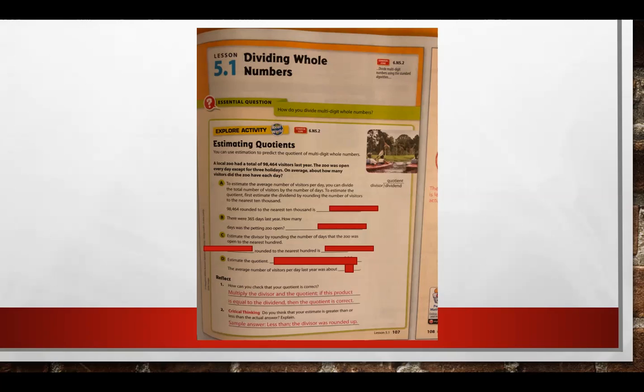Part C. Estimate the divisor by rounding the number of days that the zoo was open to the nearest hundred. 362, rounded to the nearest hundred is 400. Estimate the quotient. 100,000 divided by 400. We get the 100,000 from us rounding 98,464, the total number of visitors, our dividend. 100,000 divided by our estimated divisor, which is 400. And so, we have the estimated quotient of 100,000 divided by 400 equals 250. The average number of visitors per day last year was about 250.